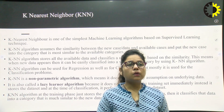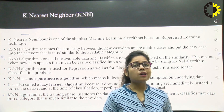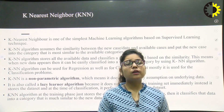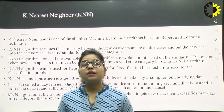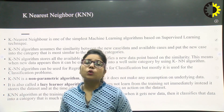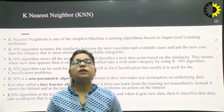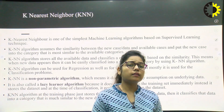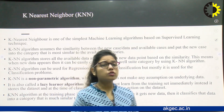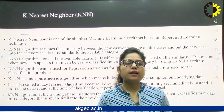In the KNN algorithm, we assume the similarity between the new case data and available cases, and put the new case into the category that is most popular or similar to the available categories. KNN algorithm stores all the available data and classifies new data points based on similarity. When new data appears, it can easily be classified into a well-suited category using KNN. KNN can be used for regression as well as classification, but mostly it is used for classification problems.